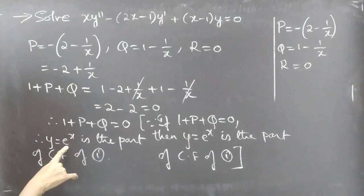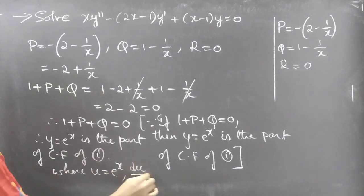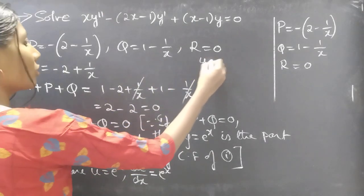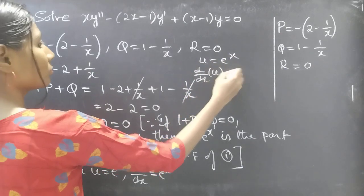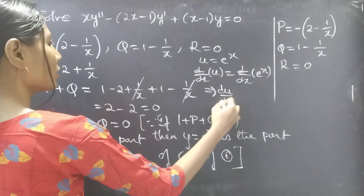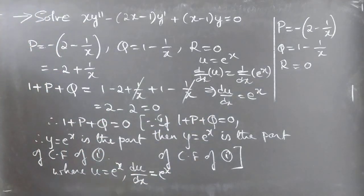Here e^x is our u, so u = e^x. We differentiate u with respect to x: du/dx = e^x. So we have both u and du/dx.